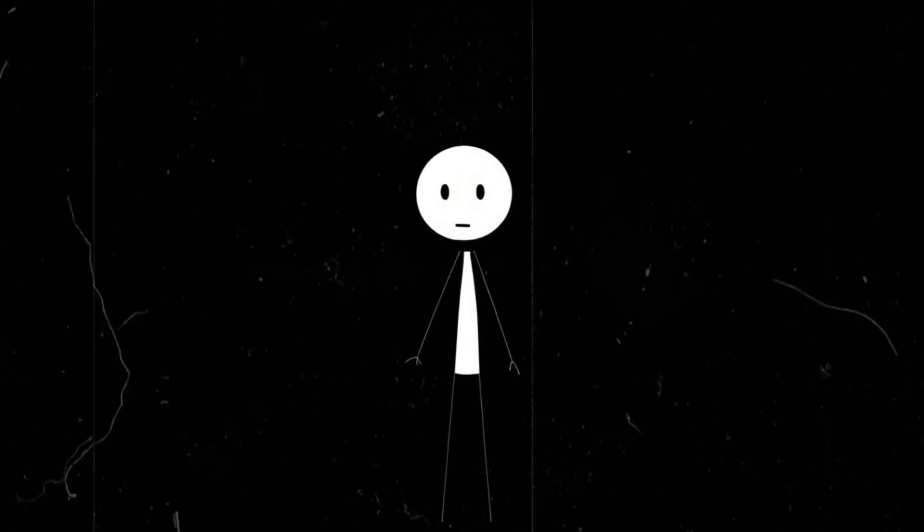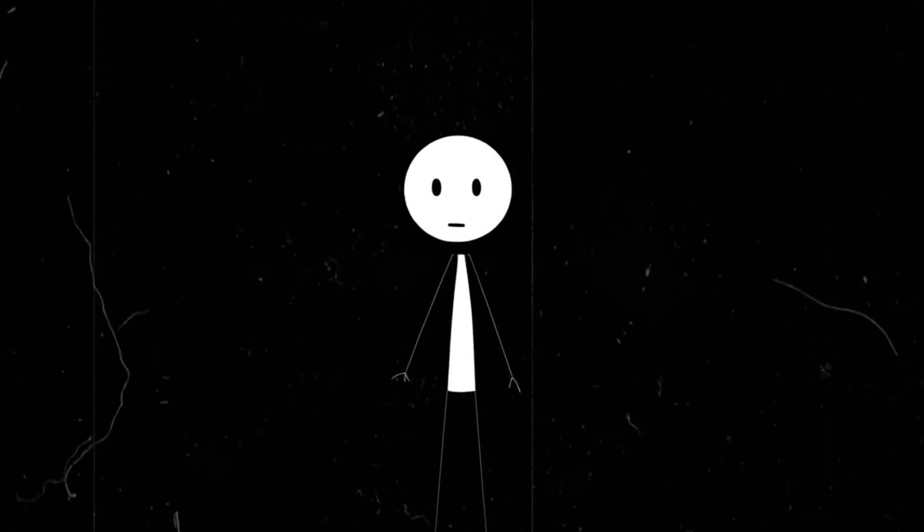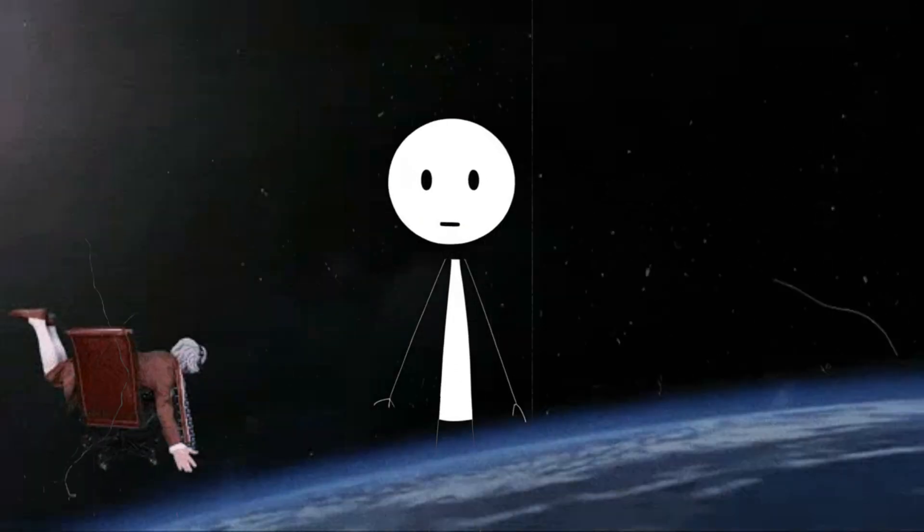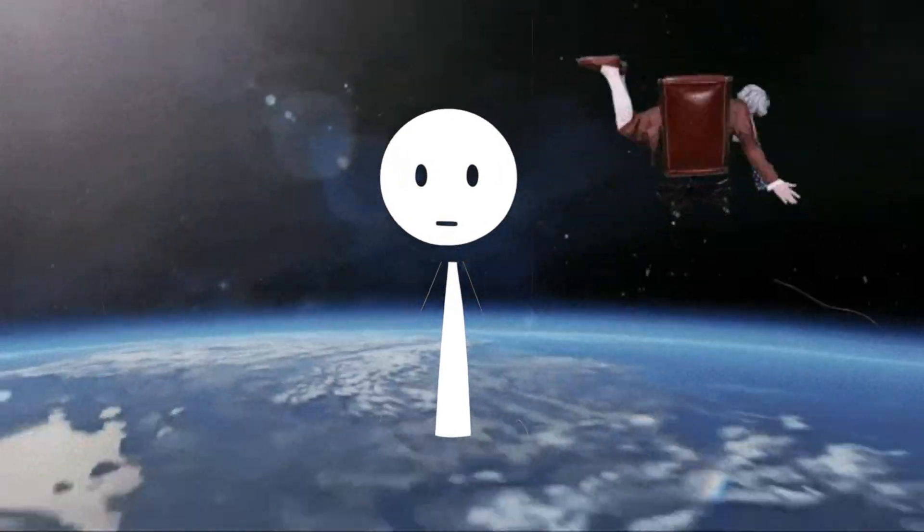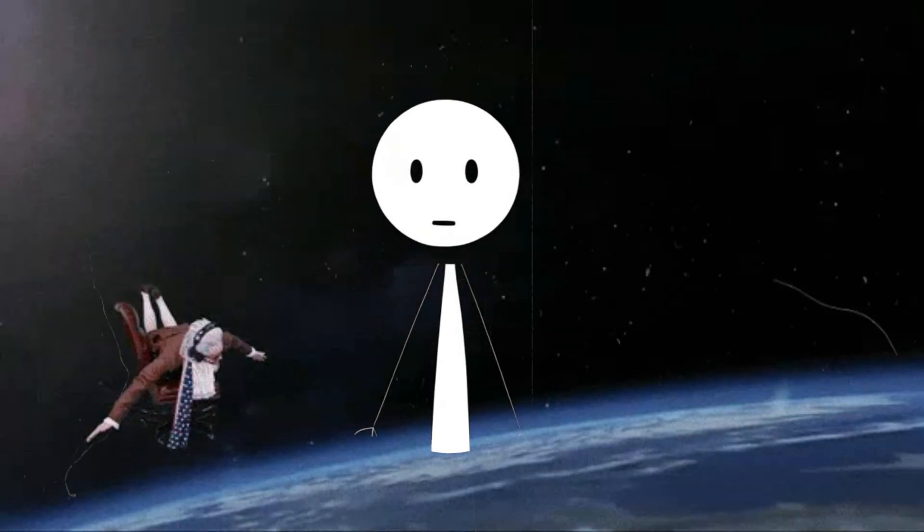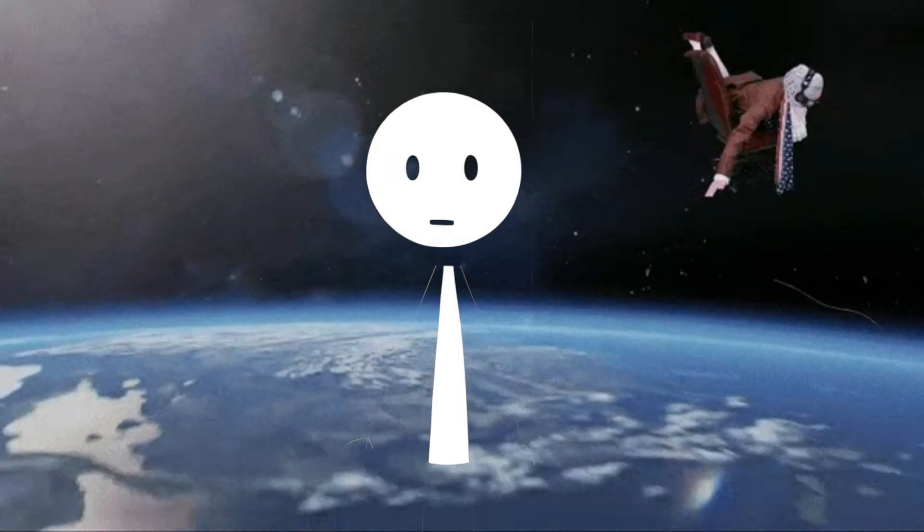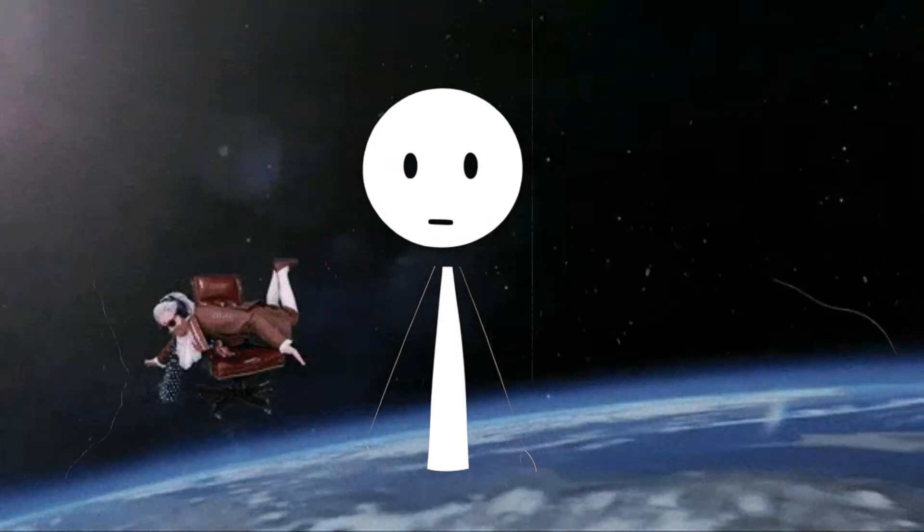You're standing still, or at least that's what it feels like. But right now, as you casually exist, you're actually moving at 1,670 kilometers per hour, 1,037 miles per hour, if you're near the equator. That's the speed at which Earth spins.